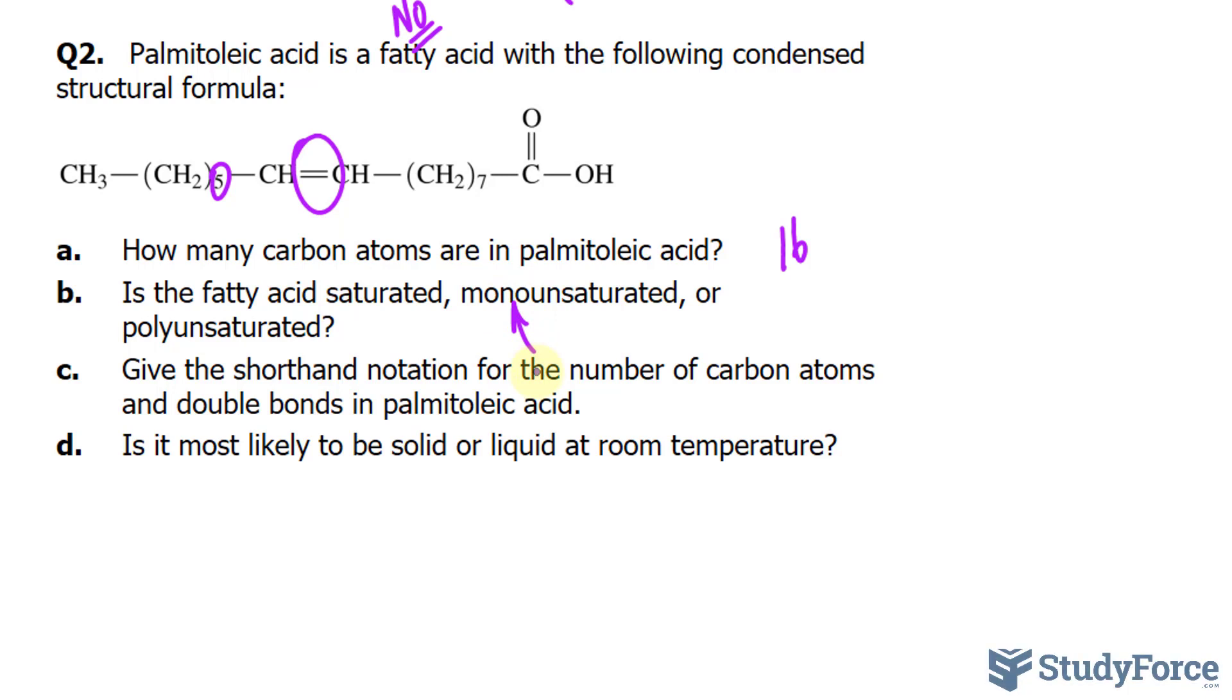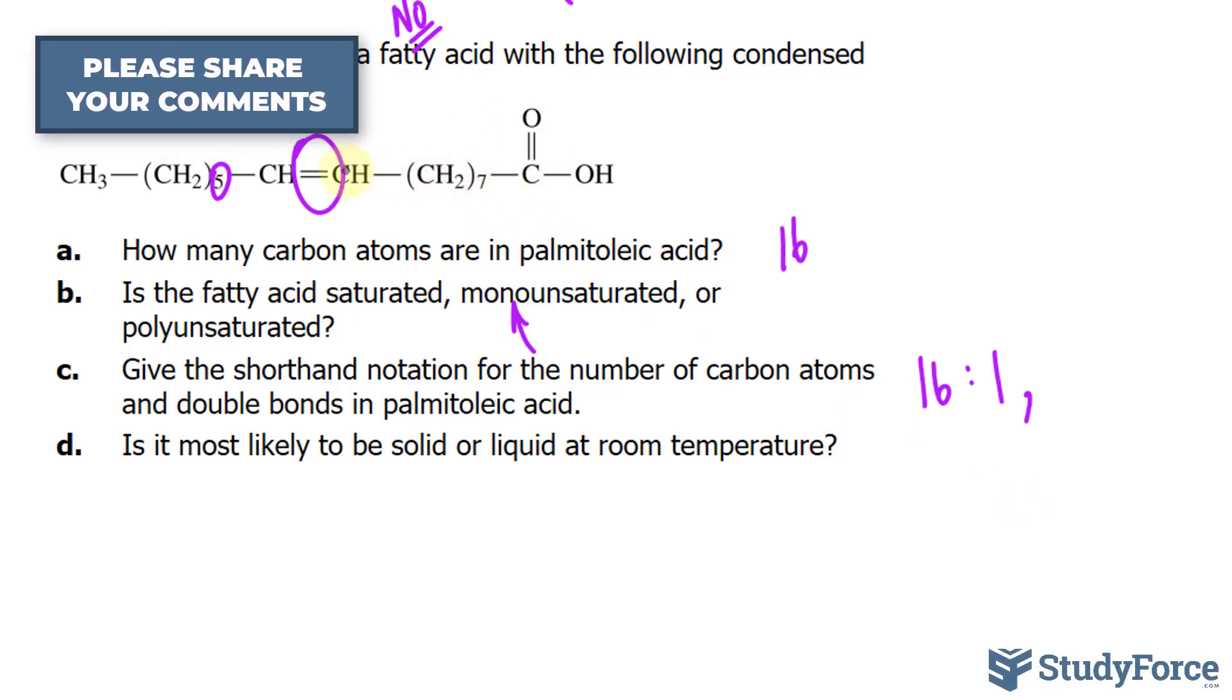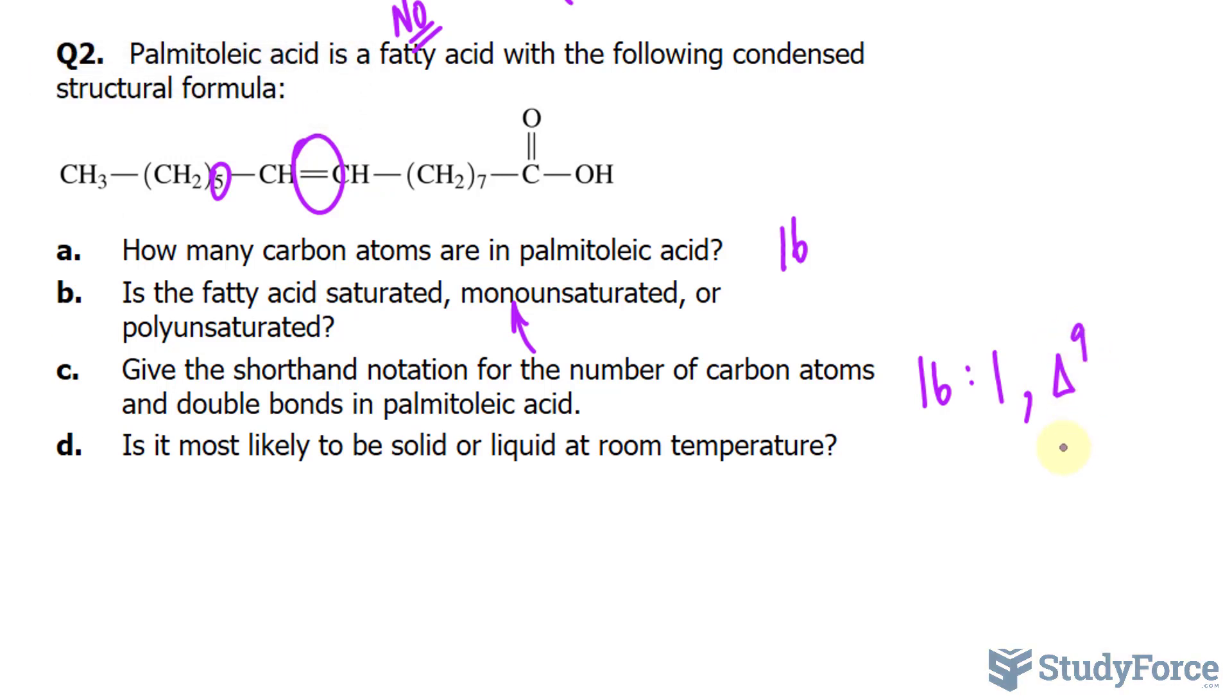Give the shorthand notation for the number of carbon atoms and double bonds in palmitoleic acid. So, we have 16 in total, and the number of double bonds is 1, comma, and it happens, starting from over here, that's 8 altogether, 9. So, we can write down delta 9, that's the position of the double bond. And is it most likely to be solid or liquid at room temperature? As mentioned before, because of this double bond, it's most likely to be a liquid.